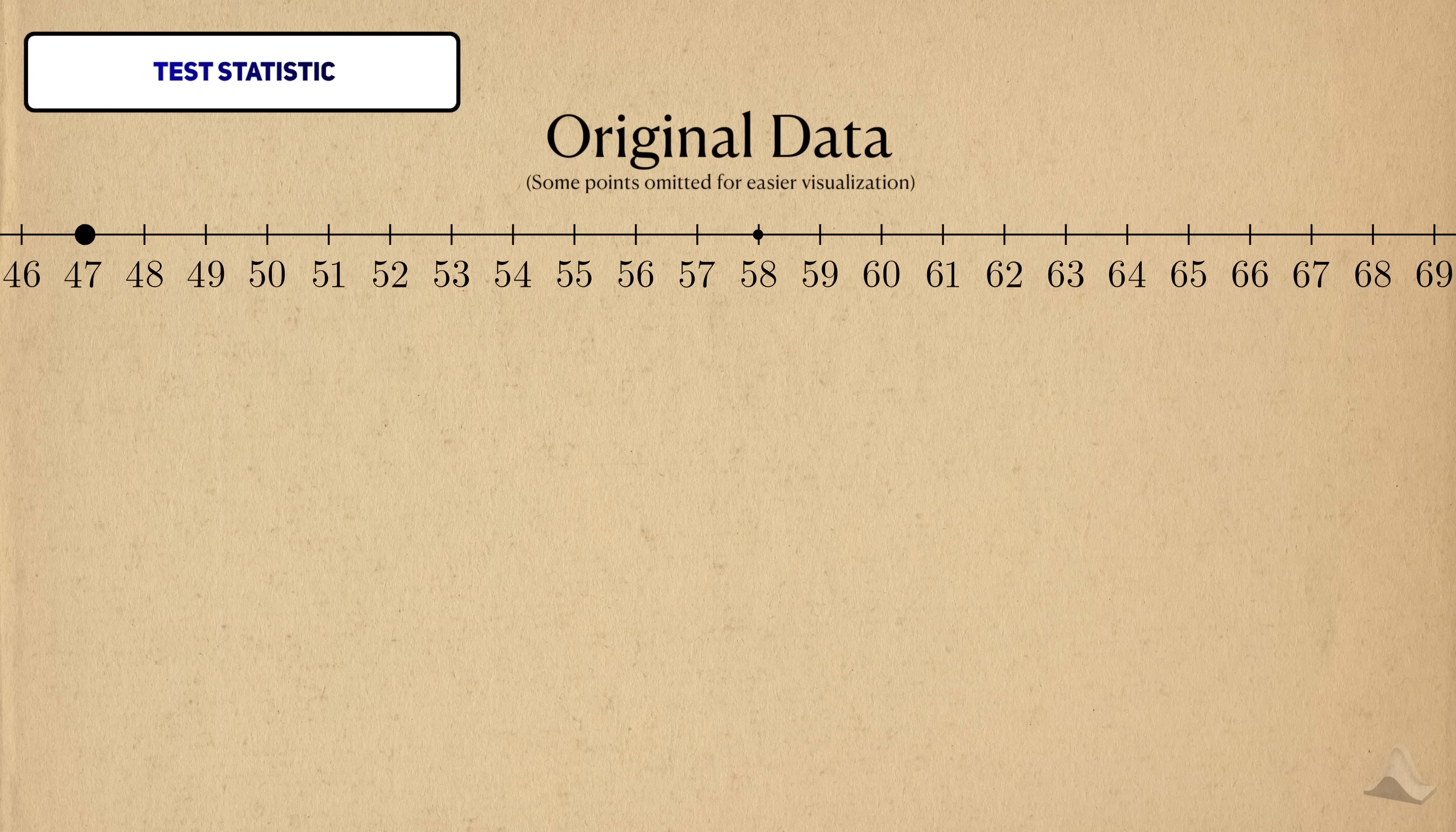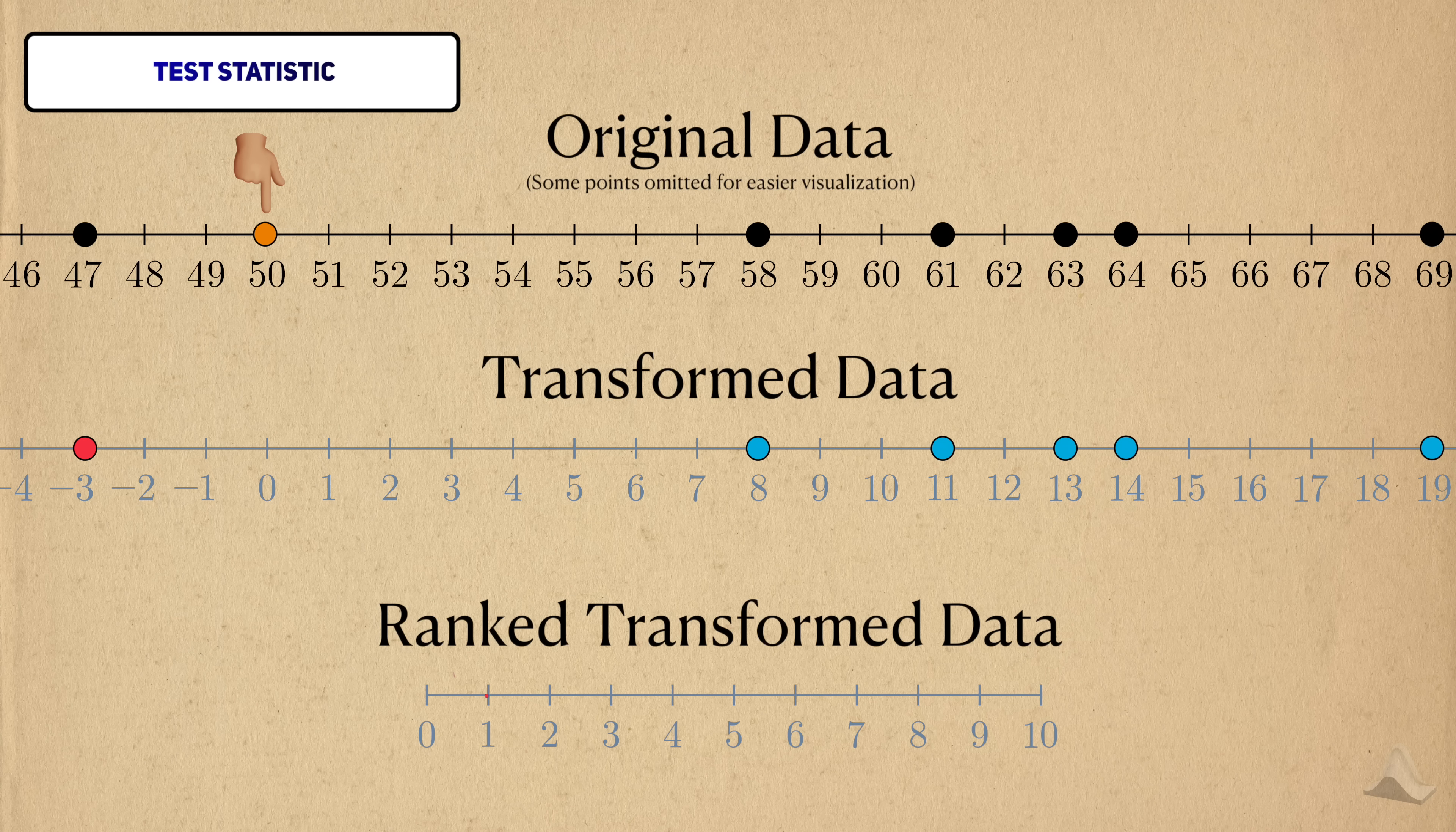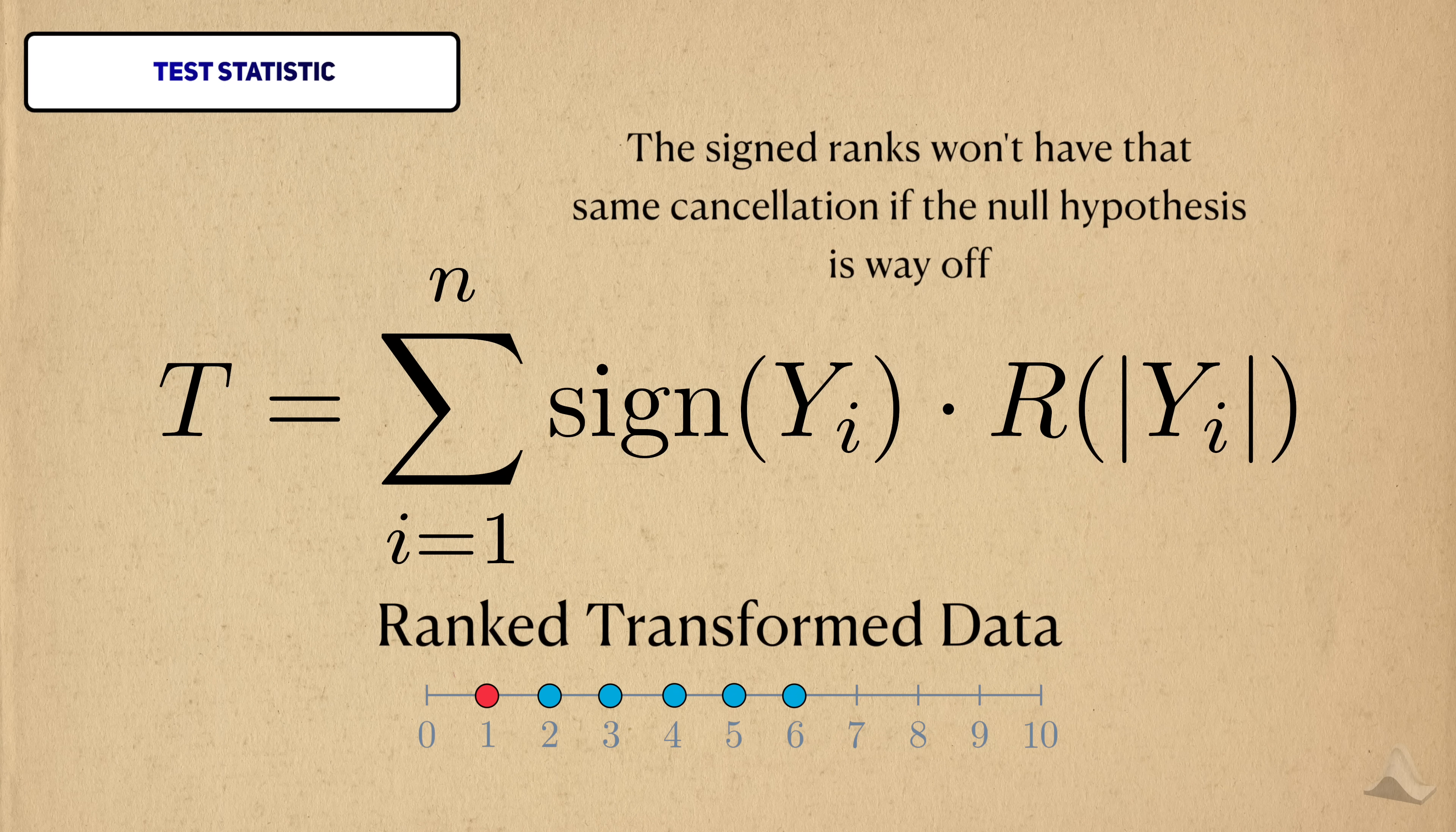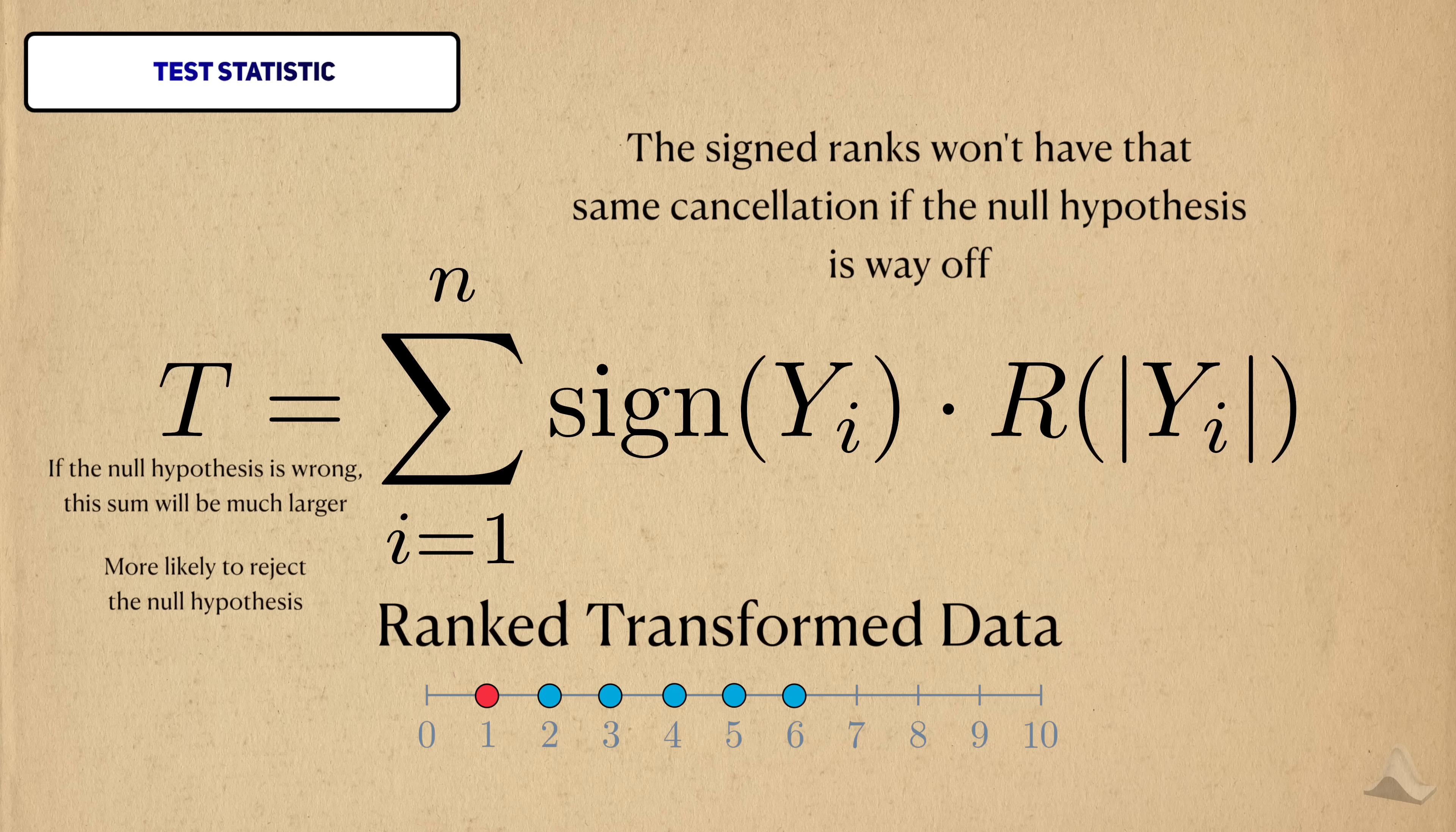But let's say that the null is totally off from the true center. If this is the case, then the majority of the data will either be positive or negative. Not only will there be an imbalance in the positive versus negative values, there will also be an imbalance in the rankings. So when we finally sum up signed ranks, we won't get that same cancellation we did when the null hypothesis was true. The test statistic will either be a large negative or positive number, which will be evidence for us to reject the null hypothesis.